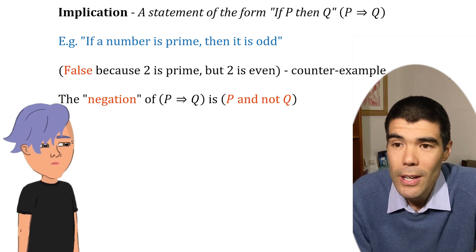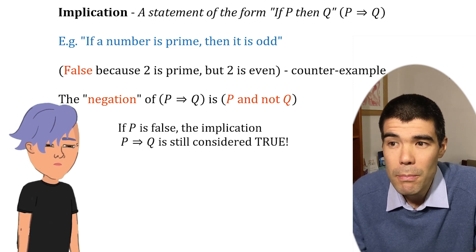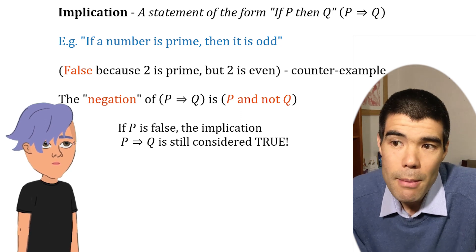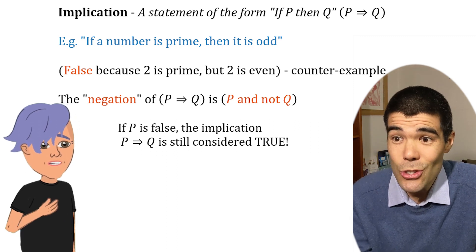Here's one that everyone finds confusing. If P is false, the implication statement P implies Q is actually true by convention. So for example, a statement, if my name is Michael, then your name is Billie Jean is actually true.